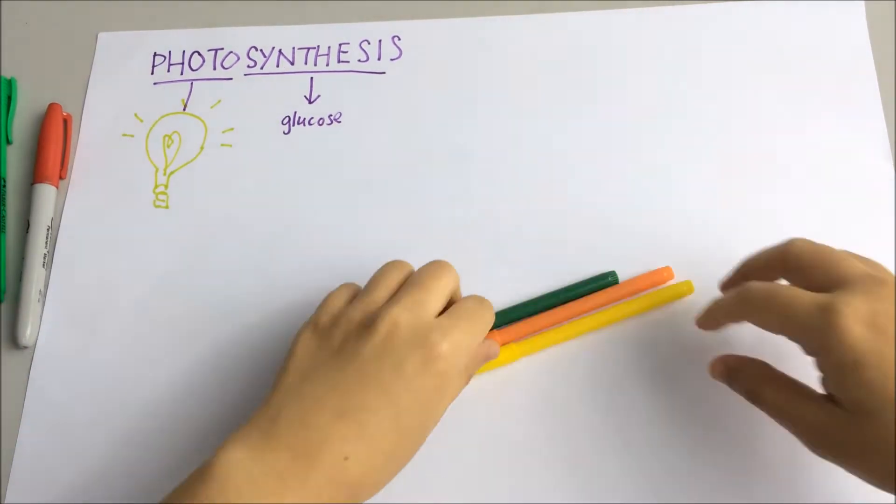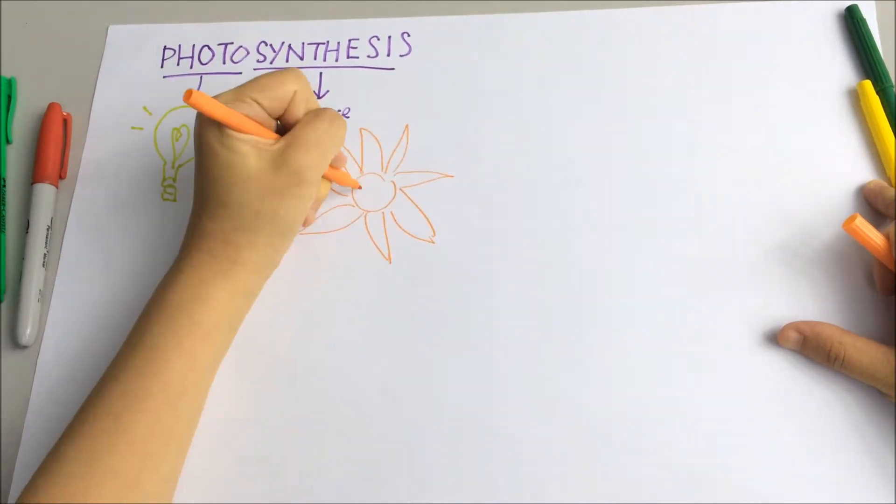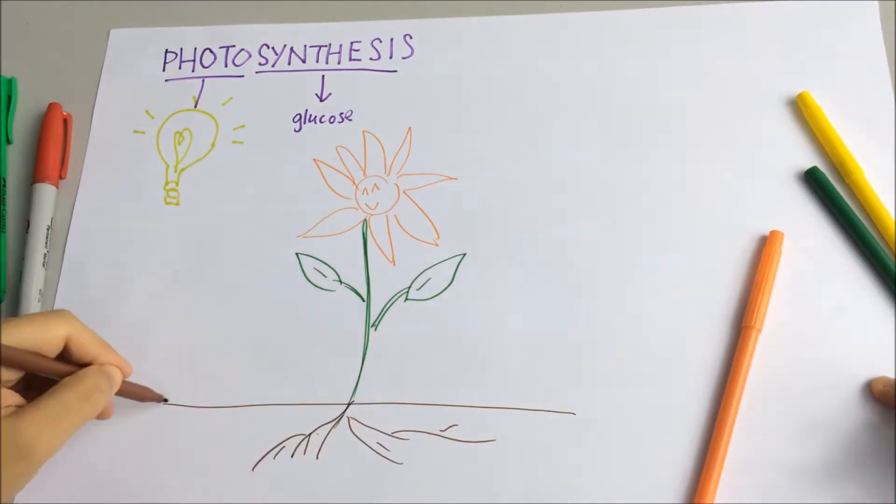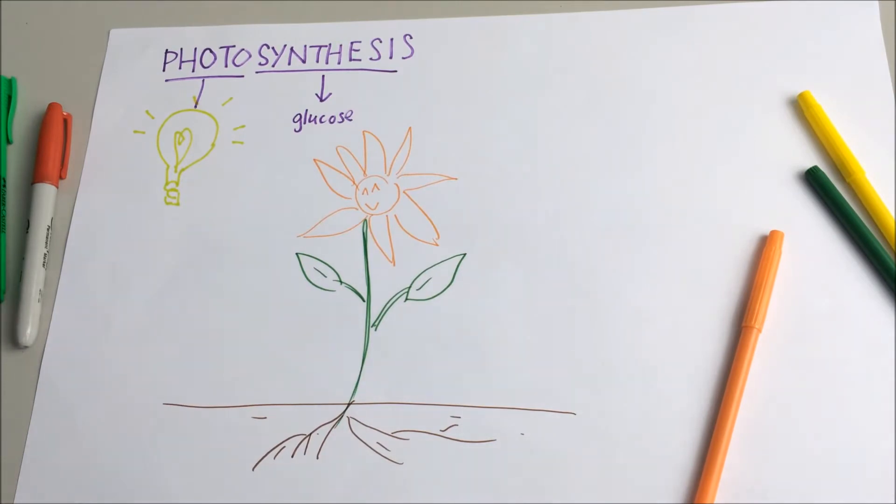Photosynthesis is the chemical reaction that happens in the leaves of green plants. It is the first step towards making food. Interestingly, not just for plants but ultimately every animal on the planet.